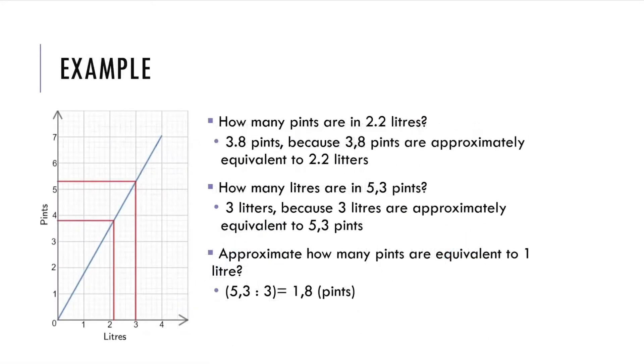For example, look at the graph. How many pints are in 2.2 liters? The answer is 3.8 pints because 3.8 pints are approximately equivalent to 2.2 liters. Same with how many liters are in 5.3 pints? The answer is 3 liters because 3 liters are approximately equivalent to 5.3 pints. Lastly, approximately how many pints are equivalent to 1 liter? Simple, just take 5.3 divided by 3 and we got 1.8 pints.